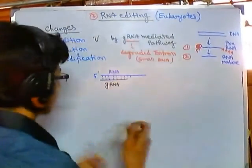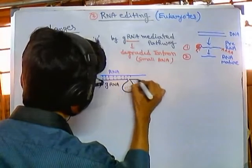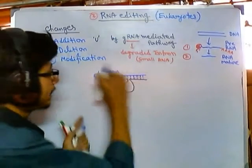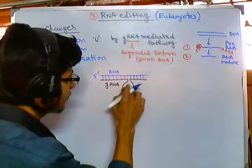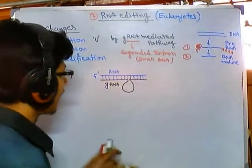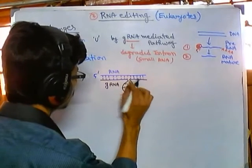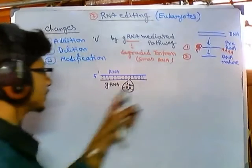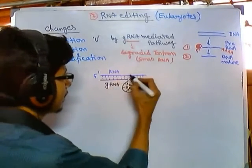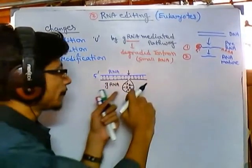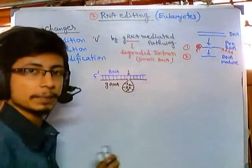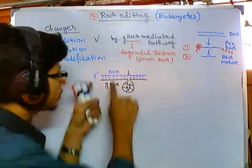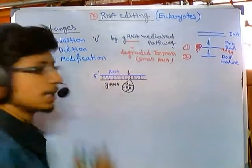What we get is complementarity at this region and also at this region, but there is no complementarity at the middle part, which is filled with some adenine sequences. There are some adenines present in this guide region. As there is no adenine present in the opposite RNA strand, there is no pairing between adenine and uracil — so there is no bonding. That is why this part of the guide RNA is popping out, bulged out, forming a loop. But the rest of the part finds its complementary partner, so they pair.